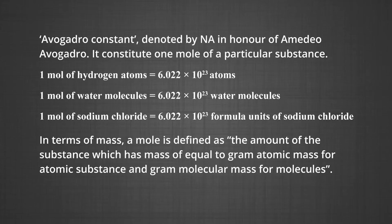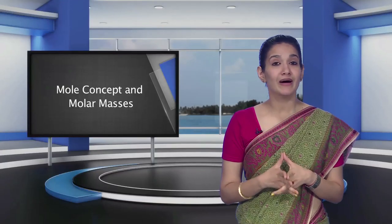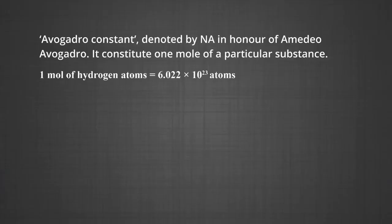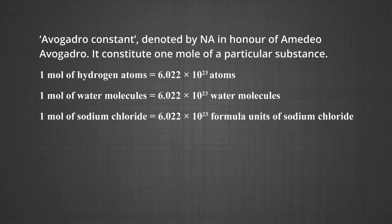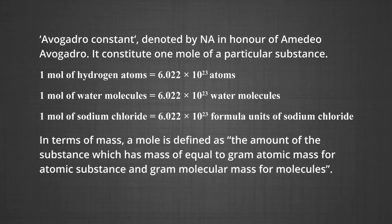So, 1 mole of hydrogen atoms = 6.022 × 10²³ atoms; 1 mole of water molecules = 6.022 × 10²³ water molecules; 1 mole of sodium chloride = 6.022 × 10²³ formula units of sodium chloride. In terms of mass, a mole is defined as the amount of substance which has mass equal to gram atomic mass for atomic substances and gram molecular mass for molecules.